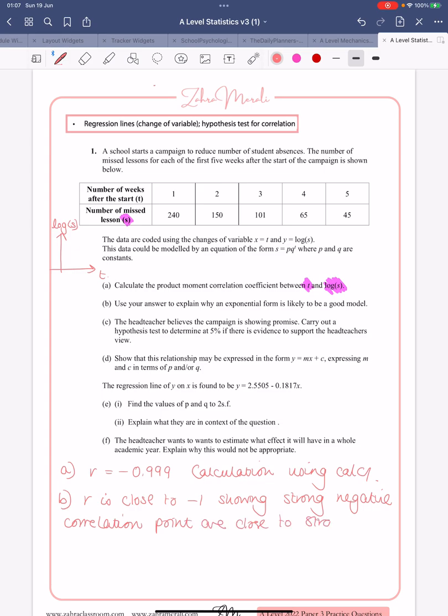Showing strong negative correlation means the points are close to a straight line for t and log s, which can be rearranged to exponential form.